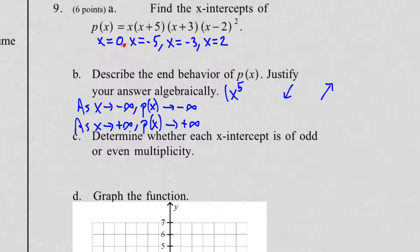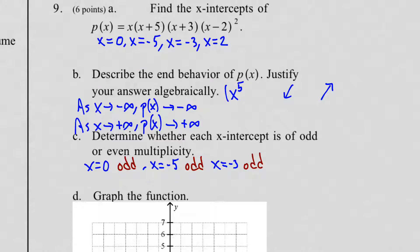Write each one: x equals 0 — odd multiplicity, happens once. x equals negative 5 — odd, happens once. x equals negative 3 — odd, happens once. x equals 2 — even, because its factor is to the 2nd power. Not because the number 2 is even, but because the power of the original factor is even.